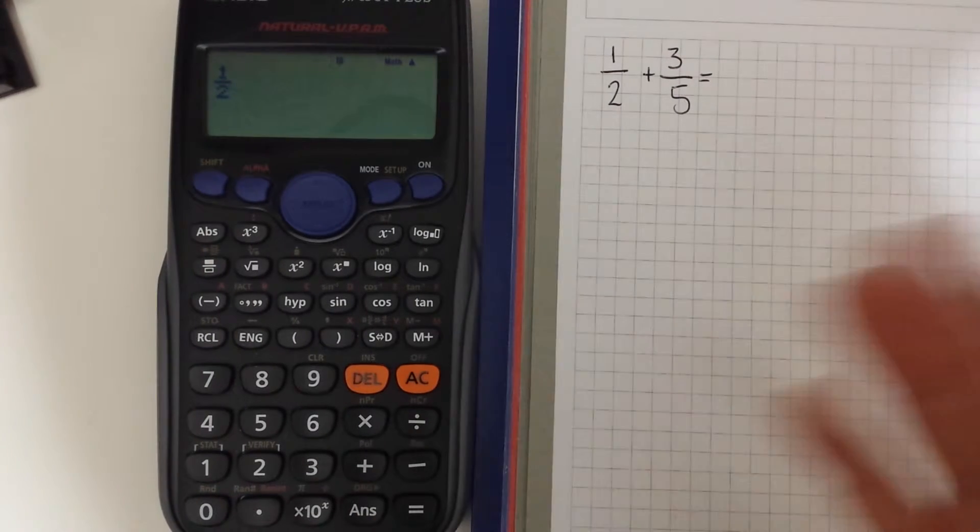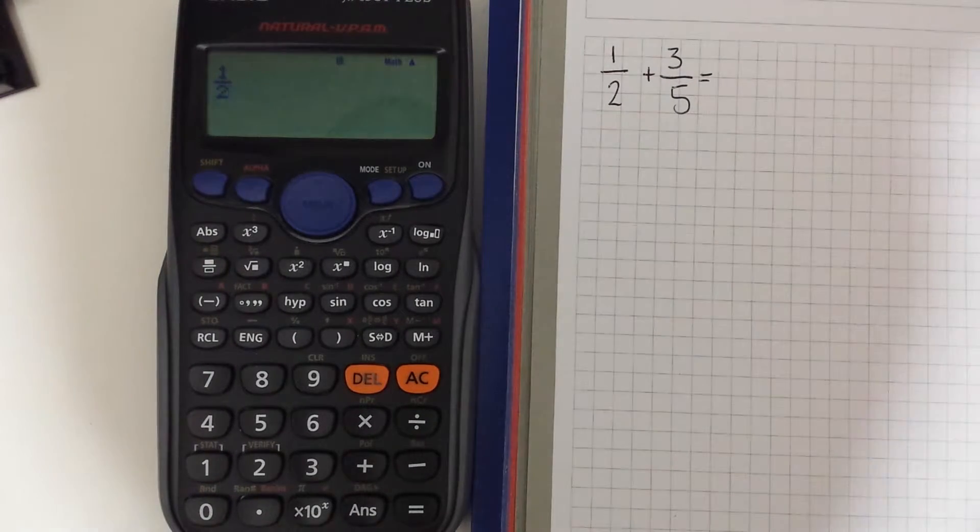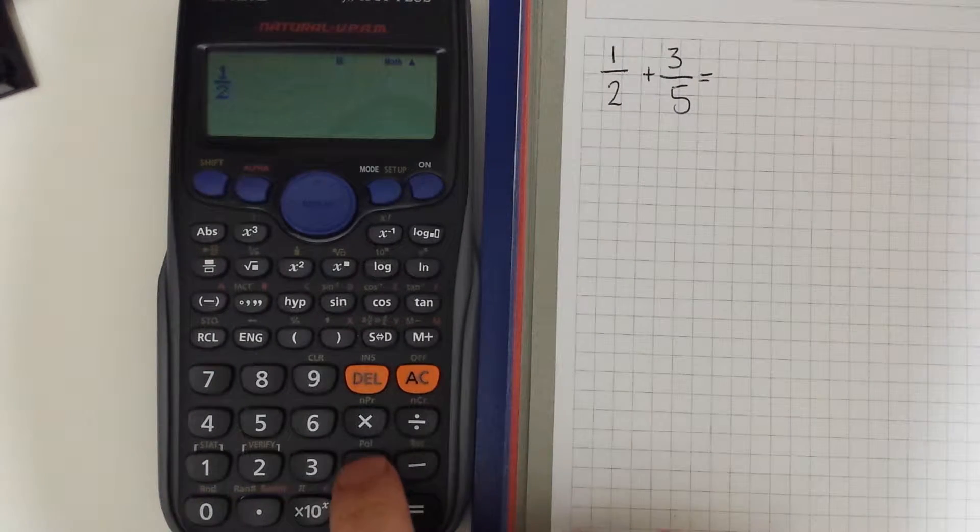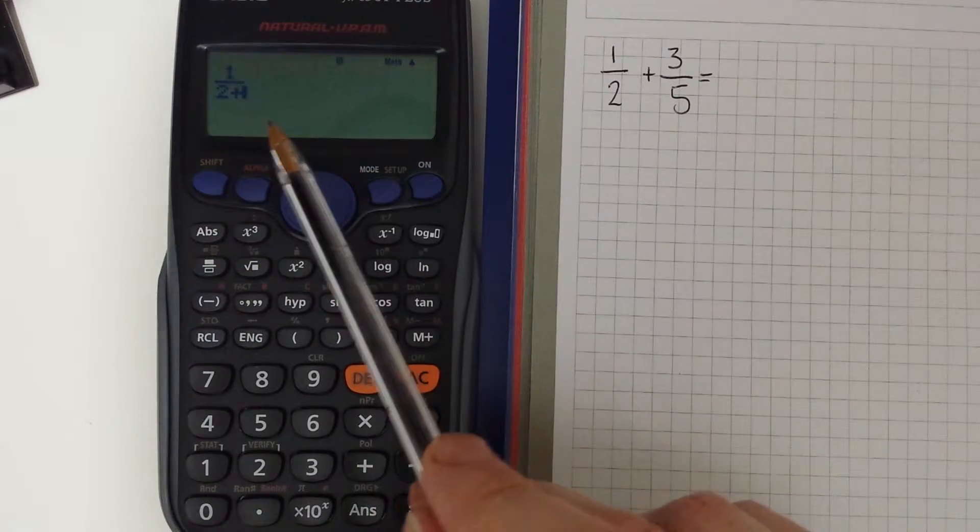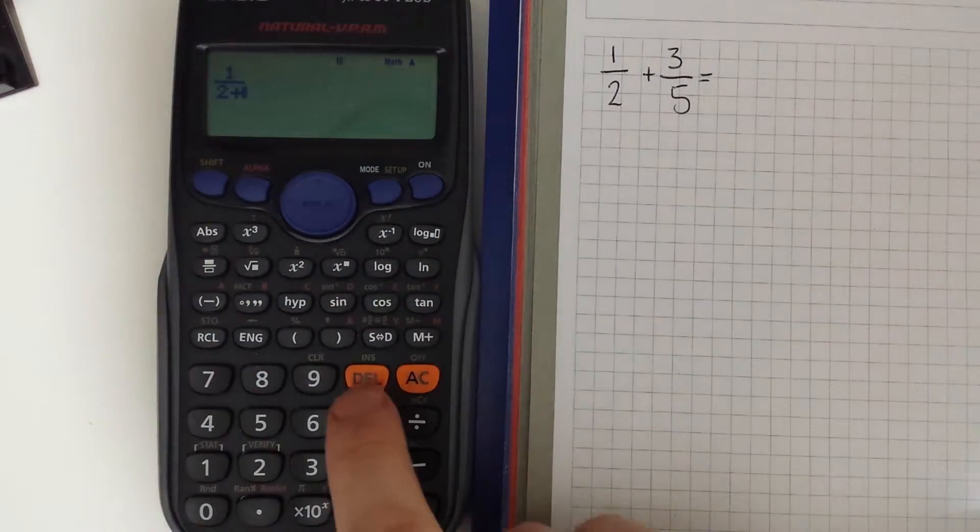Now when we're moving on to add the next fraction we can't just press add because it'll continue along the bottom row. So let me just get rid of that.